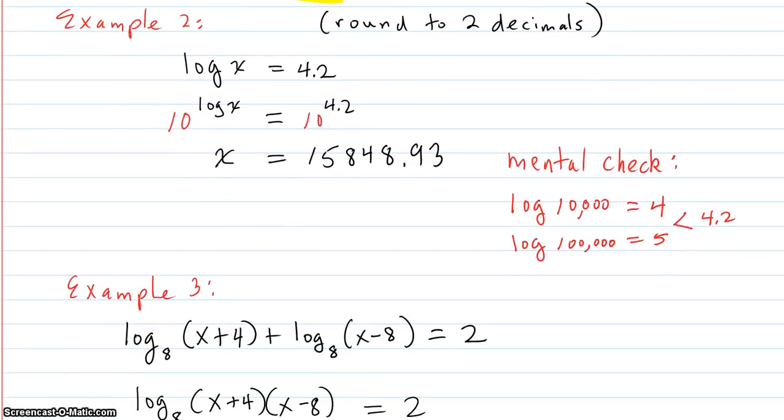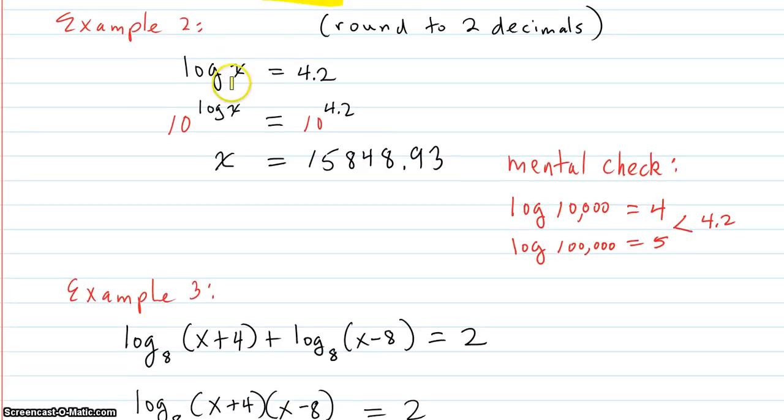Okay. Example 2. Log base 10. Whenever you see LOG, just think in your mind, it's log base 10. So if you want to undo that log base 10, we'll put 10 as a base on both sides of the equation. 10 to the log base 10 of x equals x. And 10 to the 4.2, that's going to be 15,848.93.